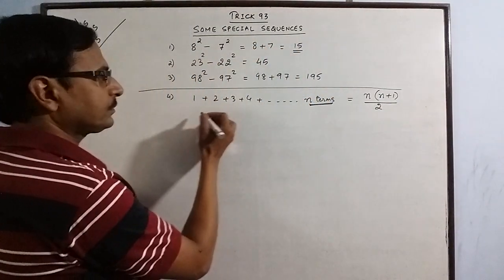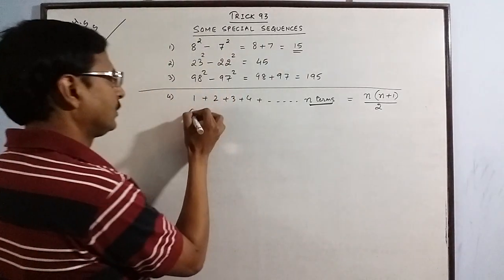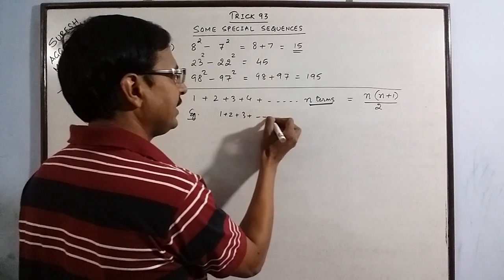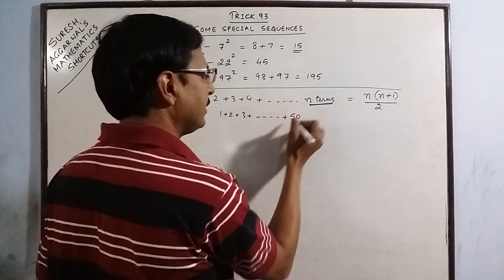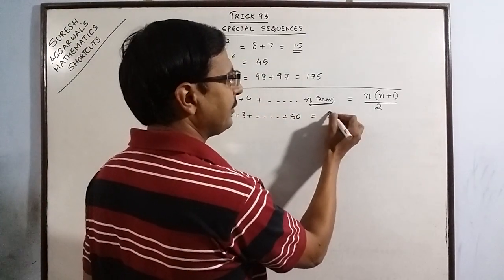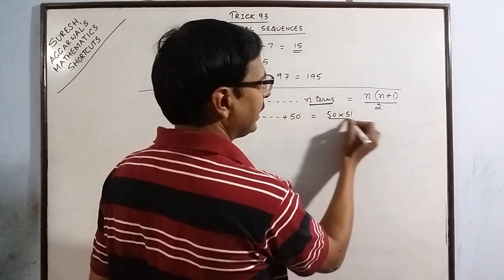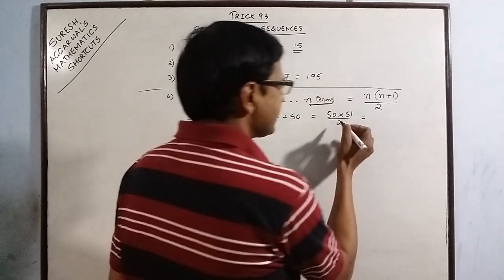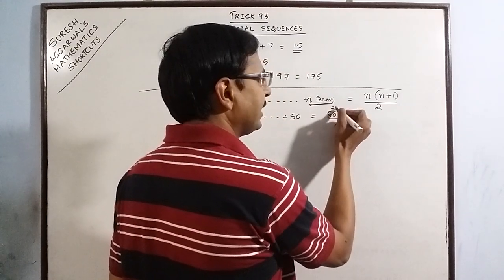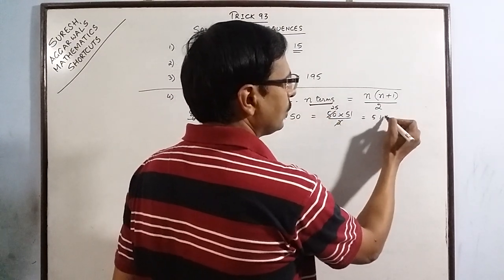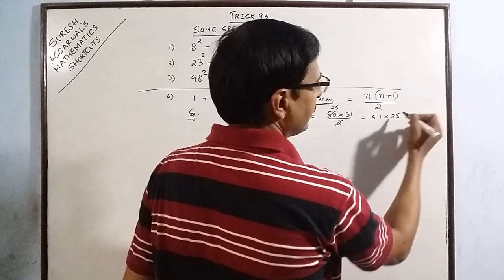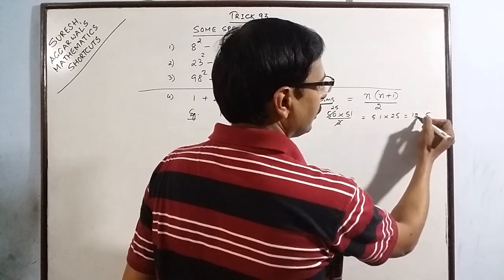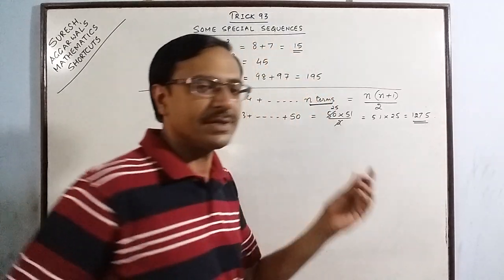For example, say we have 1 plus 2 plus 3 and we have to find the sum up to 50. The answer will be 50 multiplied by 51 divided by 2 — cancel the 2 to get 25, so the answer is 51 into 25, which gives 1275 as the required result.